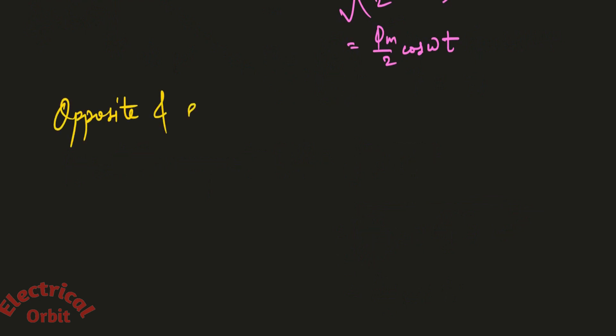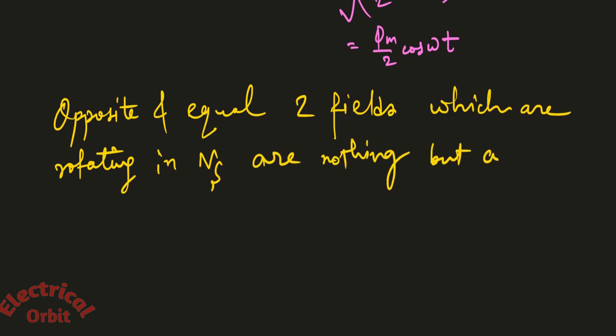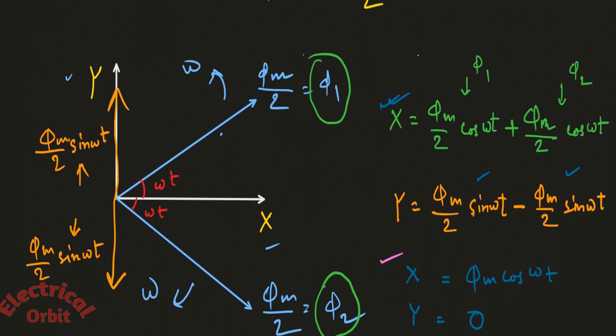That is the opposite and equal two fields which are rotating in synchronous speed are nothing but an oscillatory field along x-axis. So what is the resultant field? It is oscillating here along this x-axis, because for the rotation, for the entire field, you need to have some sort of vertical axis. But here the y component we are getting is 0, so the resultant is along this x-axis.